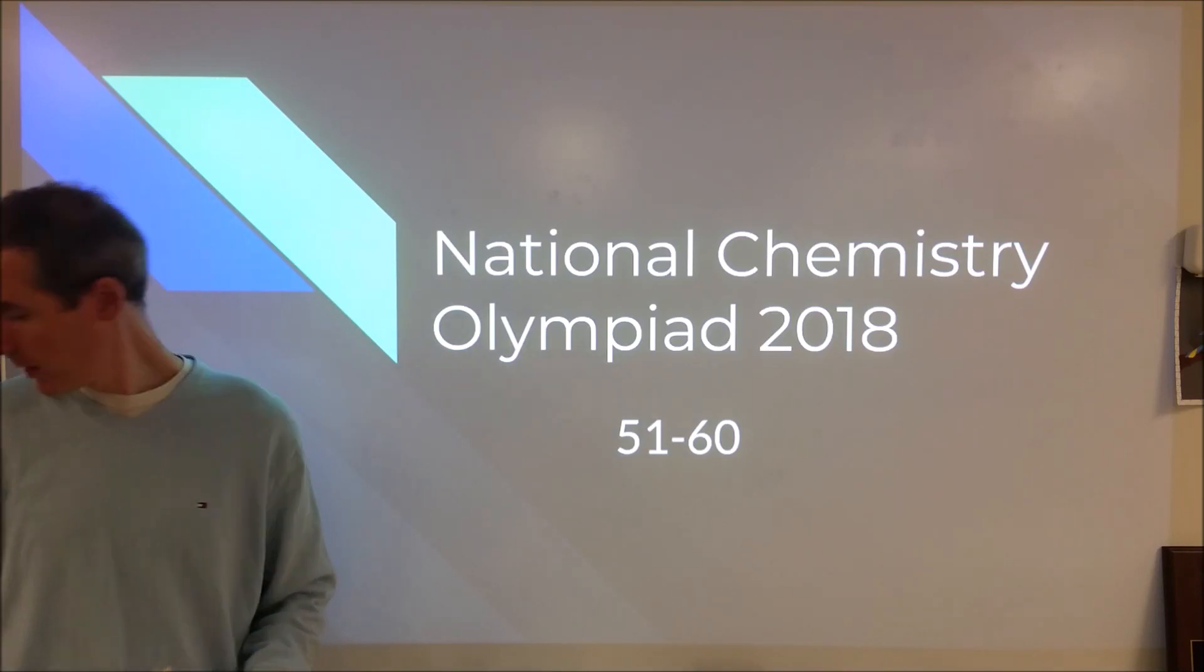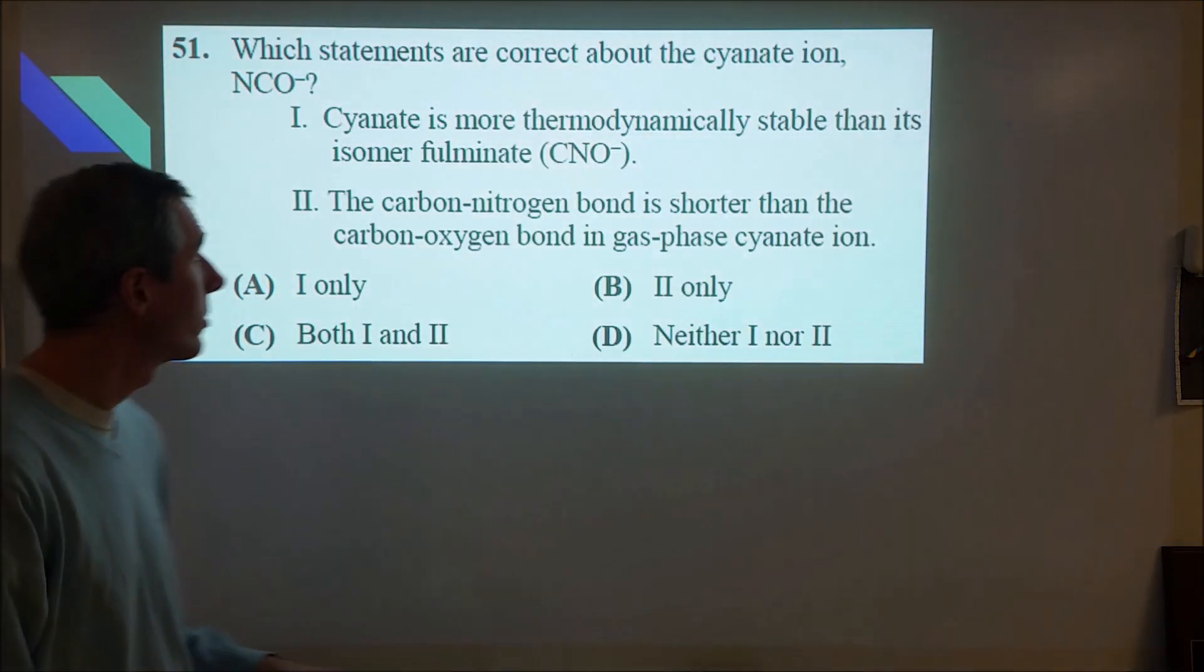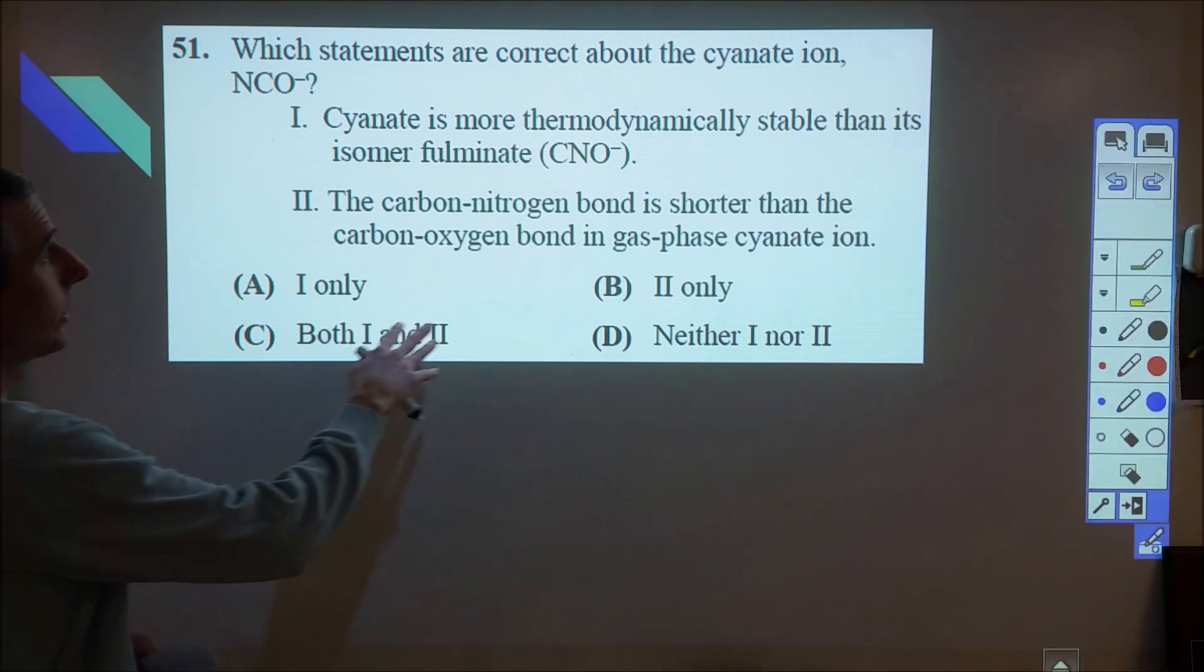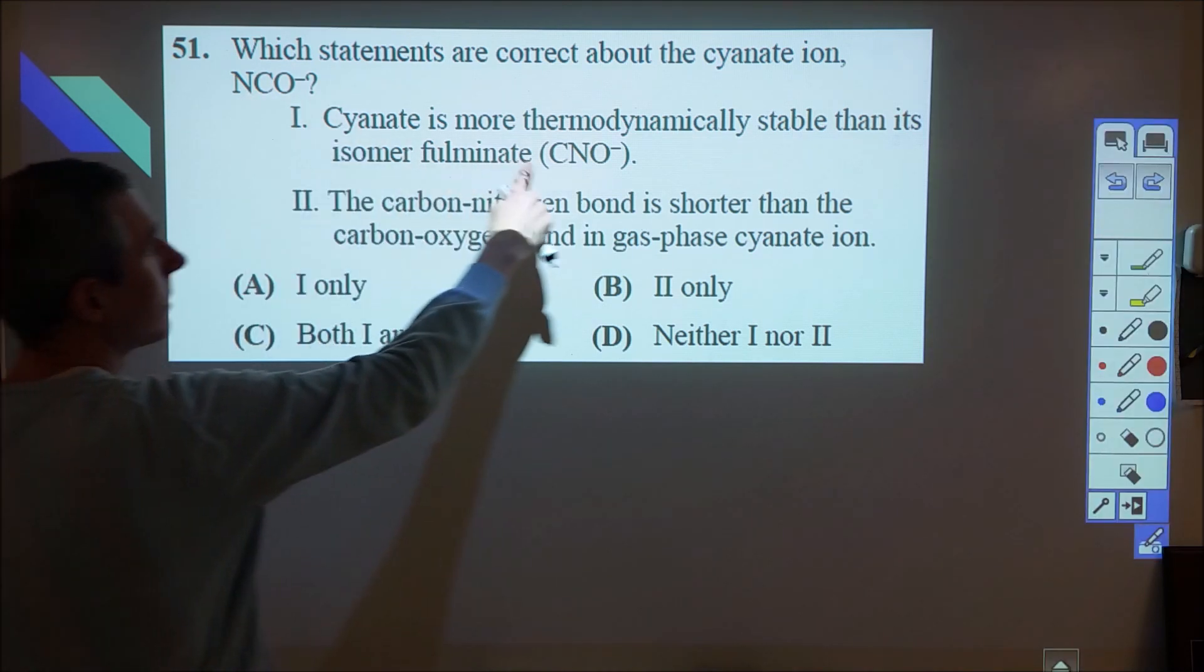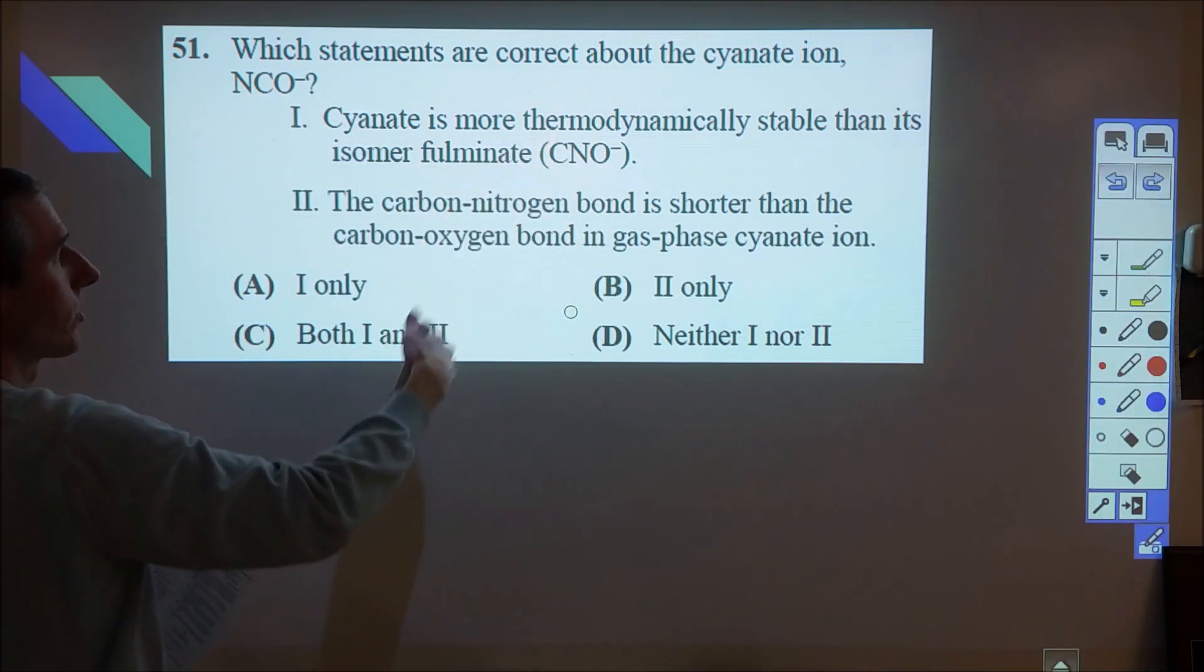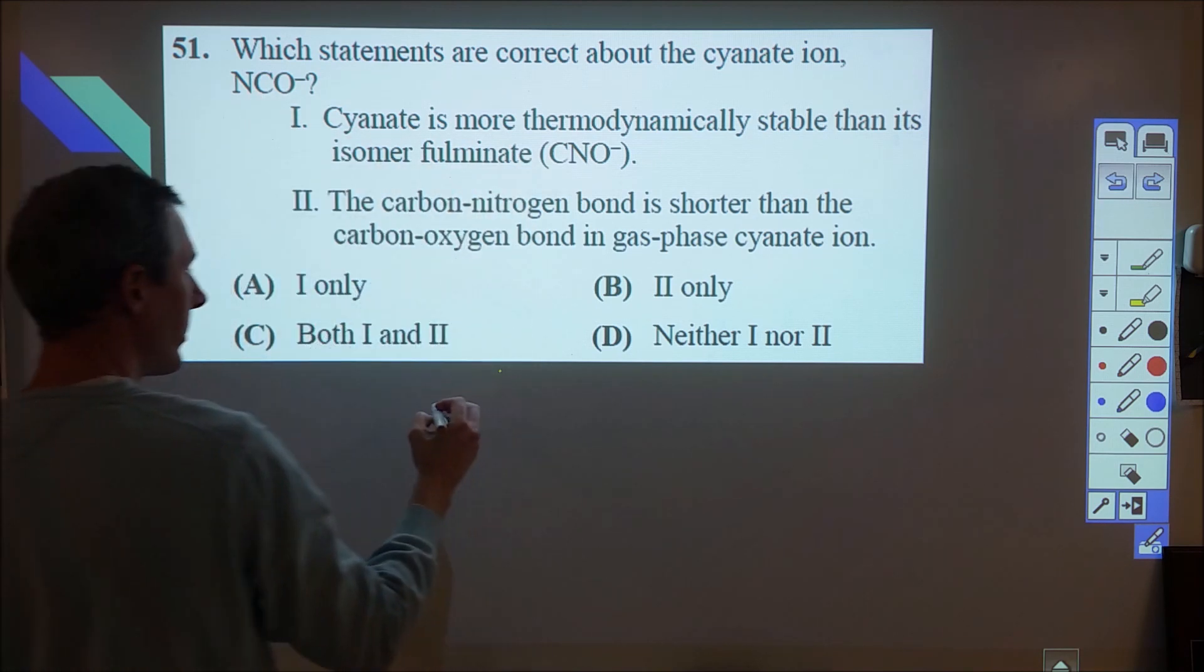And our final 10 questions from the 2018 very challenging National Chemistry Olympiad exam. This one here, we're looking at two different ions that are structural isomers, but the carbon and nitrogen are switched places.